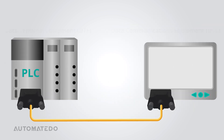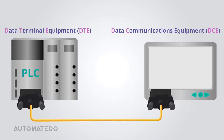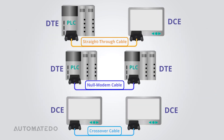RS-232 ensures serial data transmission between a primary system — Data Terminal Equipment or DTE — and a secondary system — Data Communications Equipment or DCE. RS-232 cables come in different varieties, including straight-through cables, non-modem cables, and crossover cables.